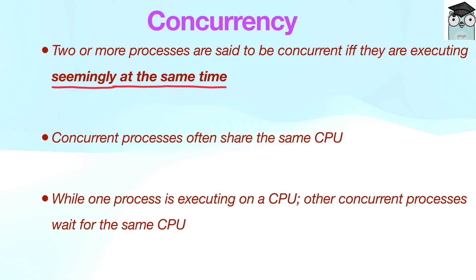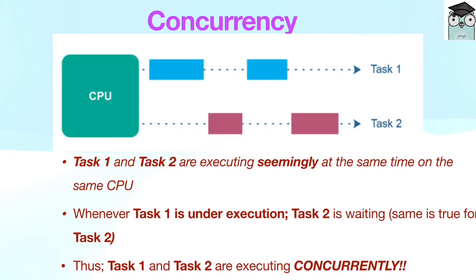Two or more processes are said to be concurrent if they are executing seemingly at the same time. Concurrent processes often share the same CPU — while one process is executing, other concurrent processes wait. For example, in the diagram shown on the screen, task 1 and task 2 are executing seemingly at the same time on the same CPU. Whenever task 1 is executing, task 2 is waiting, and vice versa. Thus, task 1 and task 2 are executing concurrently. Notice that concurrency can be achieved on a single as well as multi-processor system.